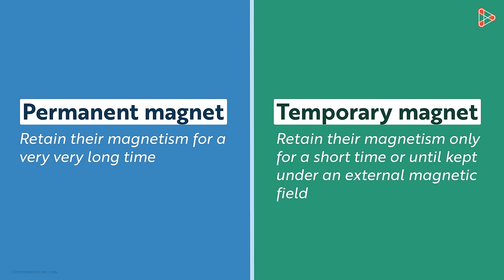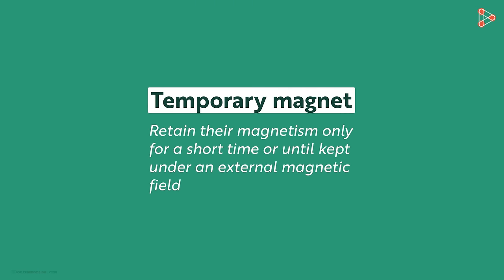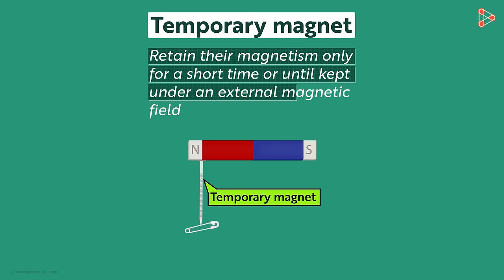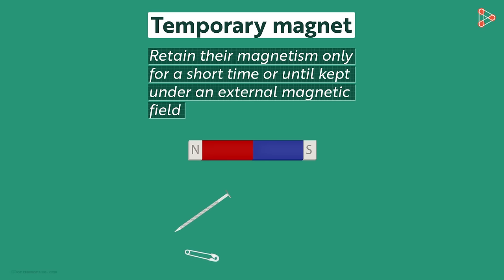We will talk about the temporary magnets first. These are magnets that retain their magnetism only for a short amount of time, or only until they are kept under an external magnetic field. When removed from the external magnetic field, they lose their magnetism.